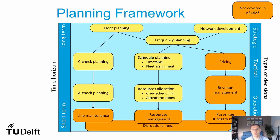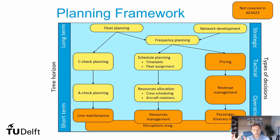At the tactical level, we have three branches. On your left-hand side, you have the aircraft maintenance branch. In the middle, you have the scheduling branch. And on the right-hand side, you have the revenue management branch.